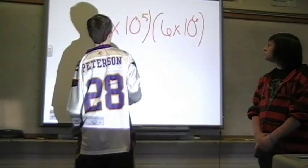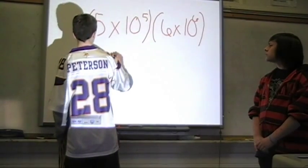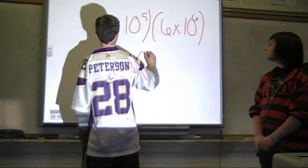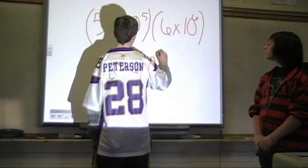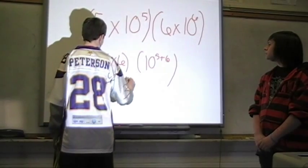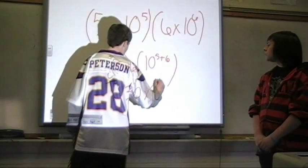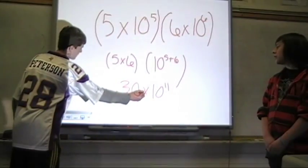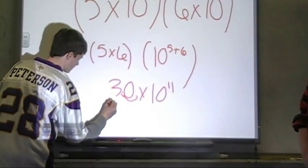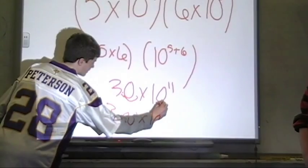First thing you do is figure out the commutative and associative properties, which would be 5 times 6 for the first part, and then you would add the exponents 5 and 6 with the 10, so it would be 30 times 10 to the 11th. And then I'll move the decimal, and I'll get 3.0 times 10 to the 11th.